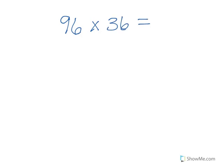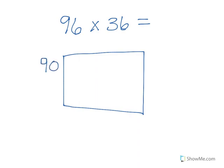This is a 2-digit by 2-digit problem, so I'm going to use the box method. 96 equals 90 plus 6, and 36 is 30 plus 6. Let me draw my boxes. My first box is 30 times 90.